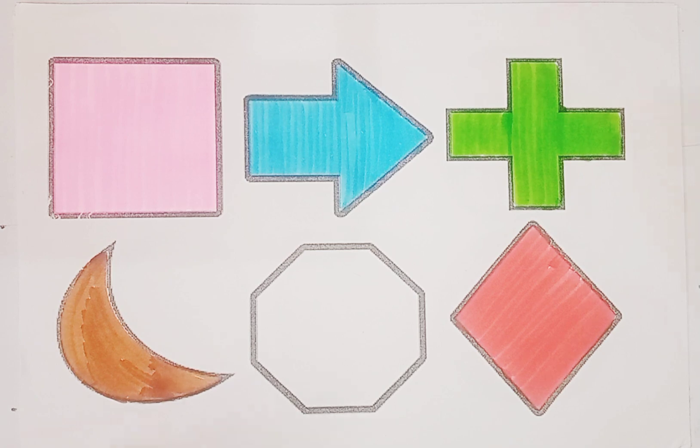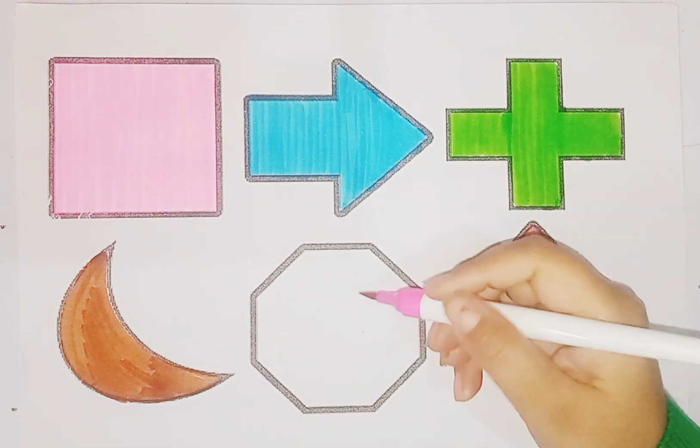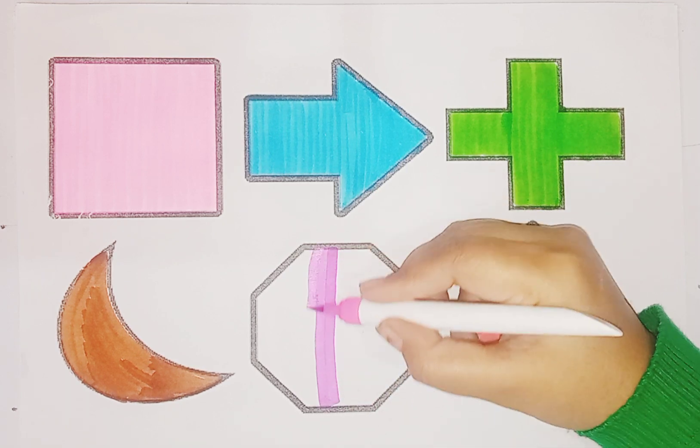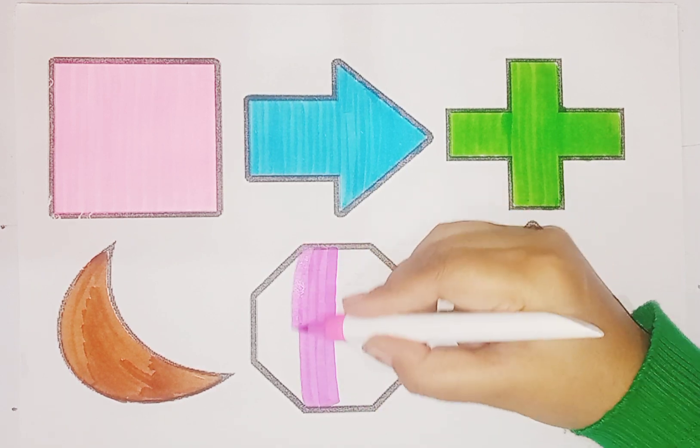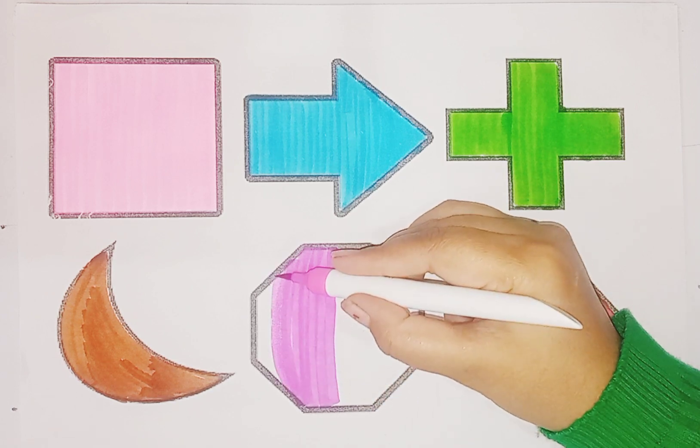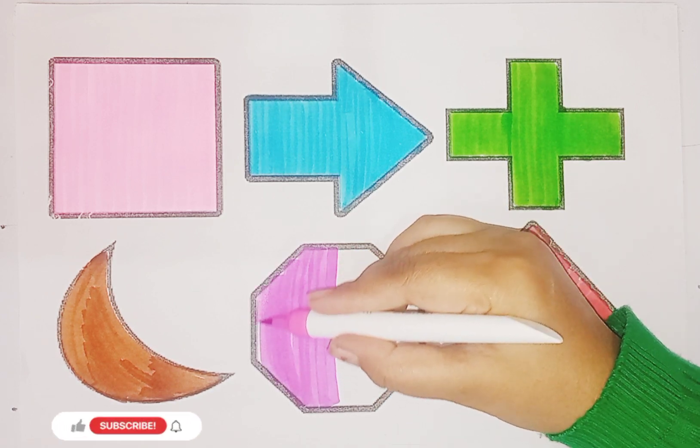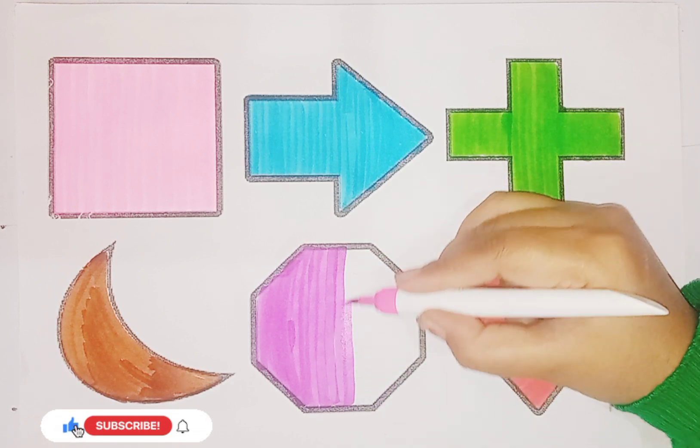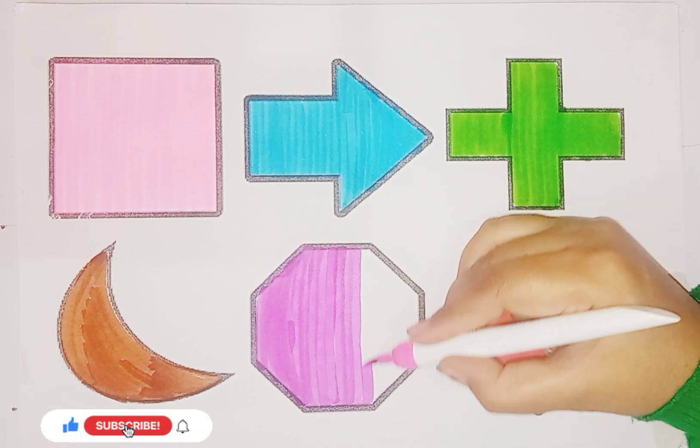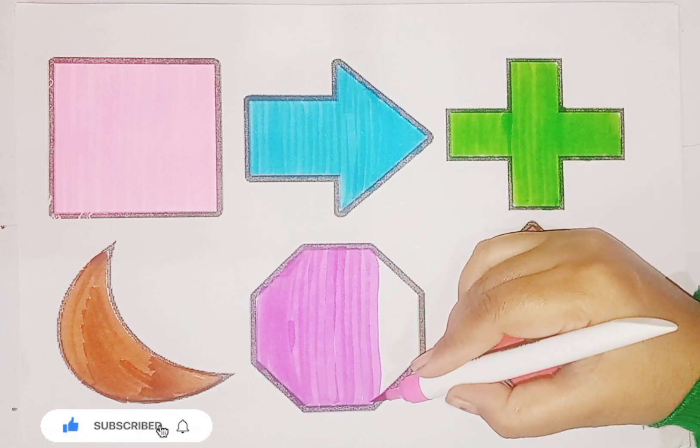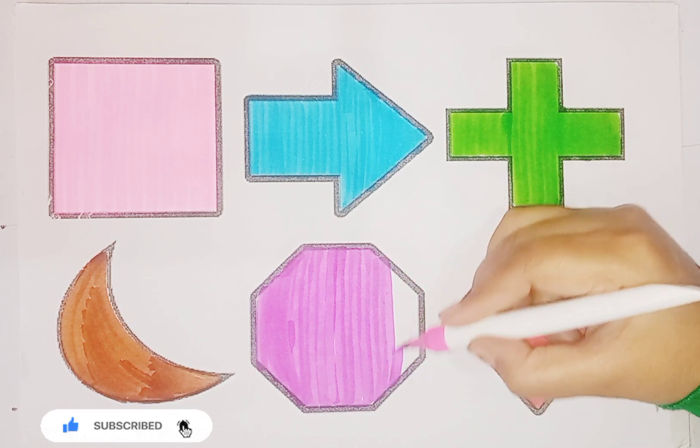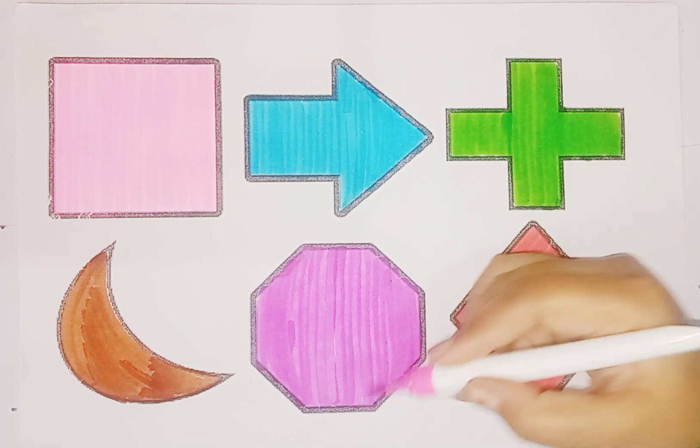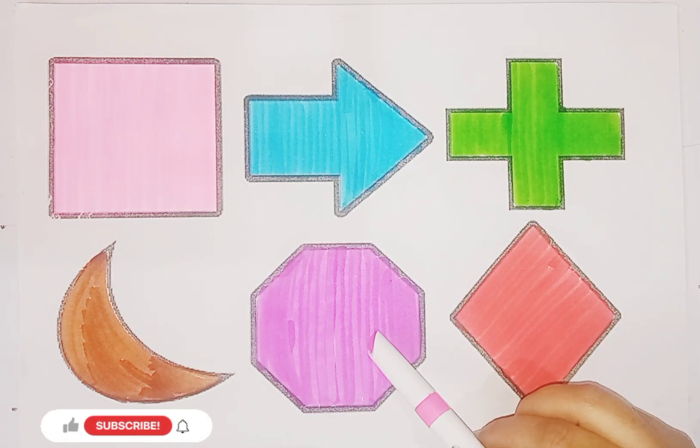Next is pink color and the shape is octagon. This is octagon and the color is dark pink. Octagon.